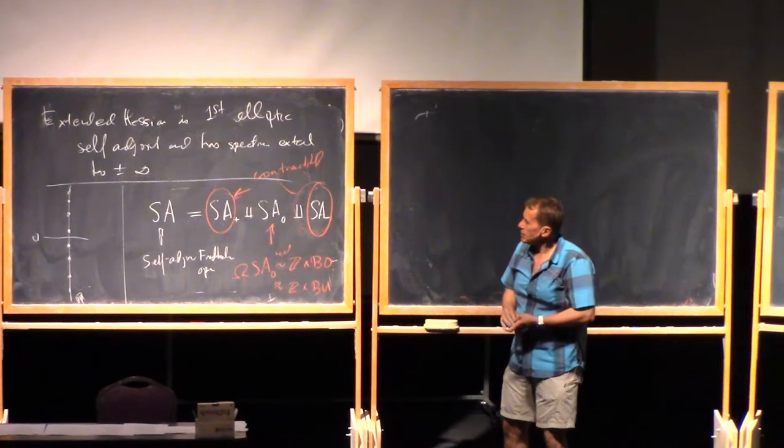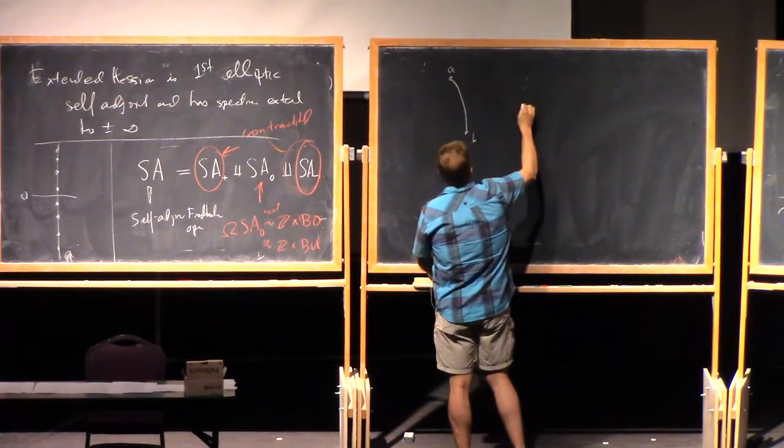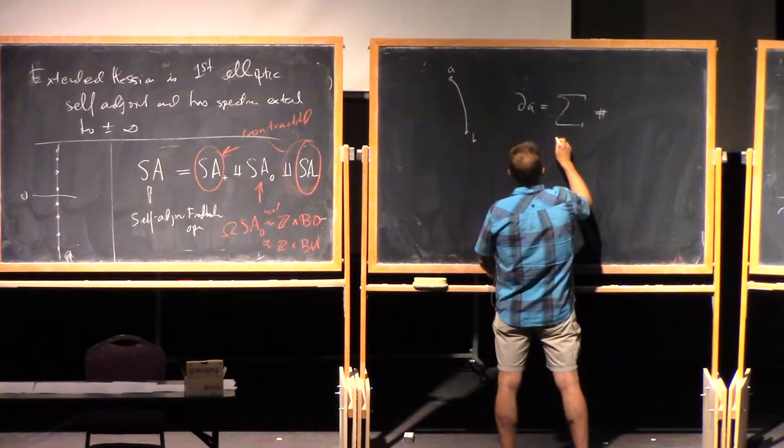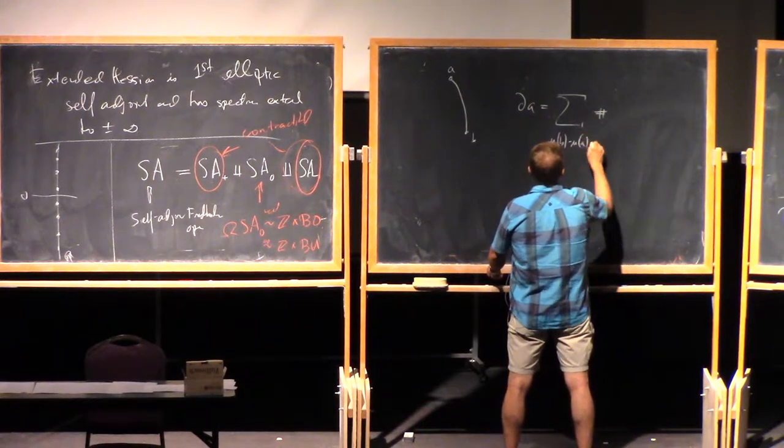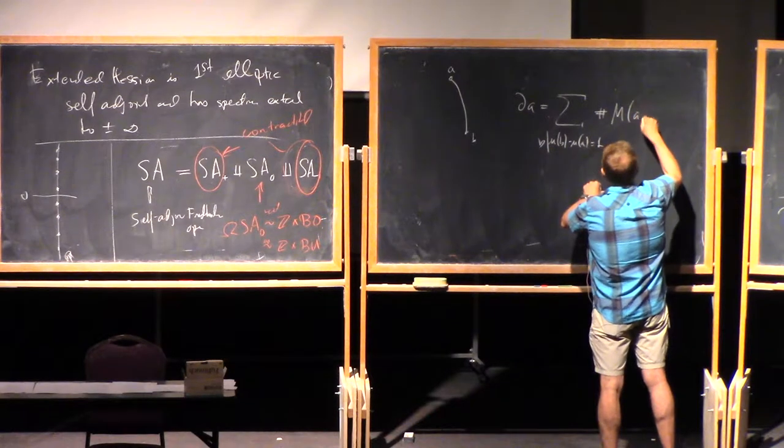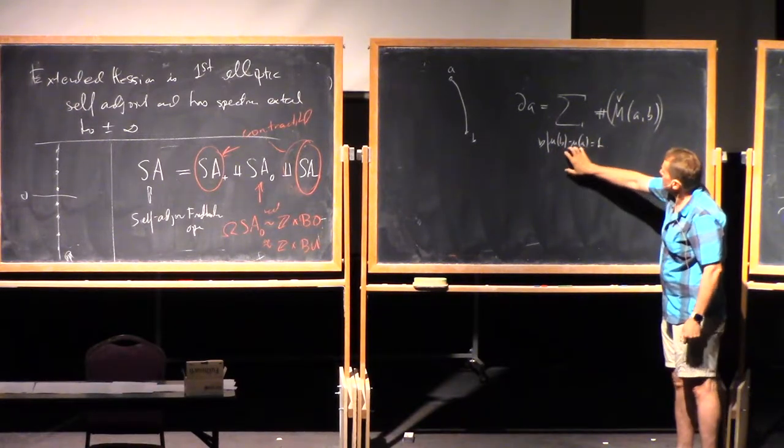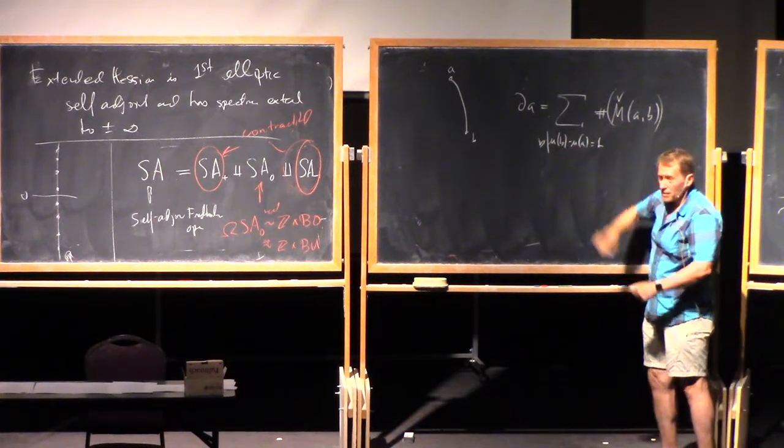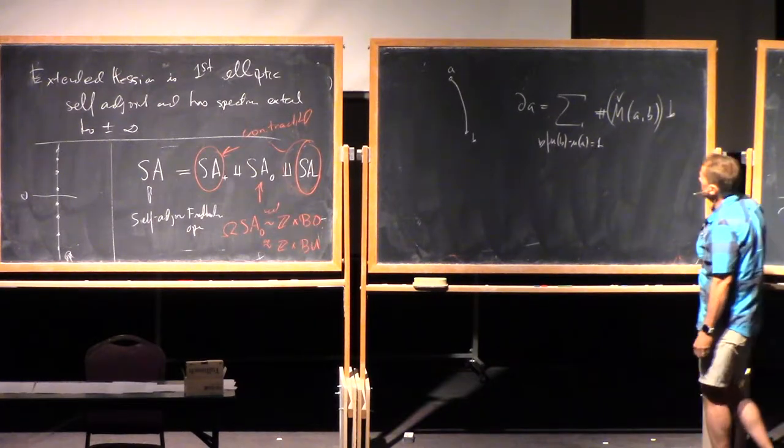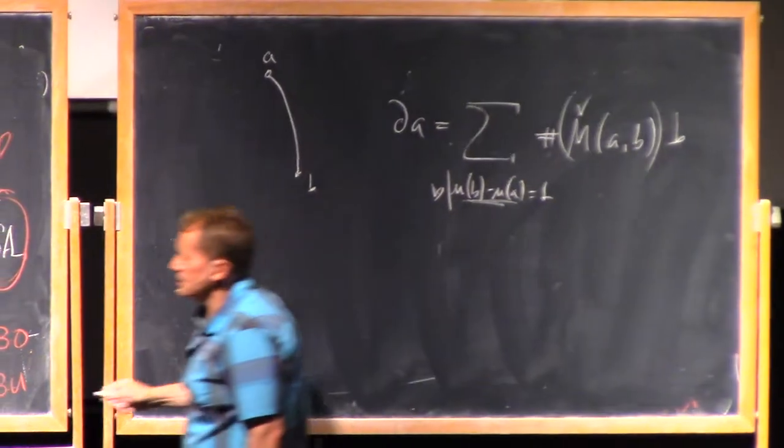Now, in Morse theory, actually... So remember, I didn't say this yet officially, but if I have two critical points, and I look at the Morse function, I want to compute the differential of A. Then, say, with mod two coefficients, what I do is I look at... I sum over B, so that the difference in the Morse indices is one, the number of points in M-A-B check. So this means that the dimension of the intersection of stable and unstable manifolds is one, but I act by translation, so it's a finite... I mean, compactness tells you it's a finite set of points, and sorry, this is times B.